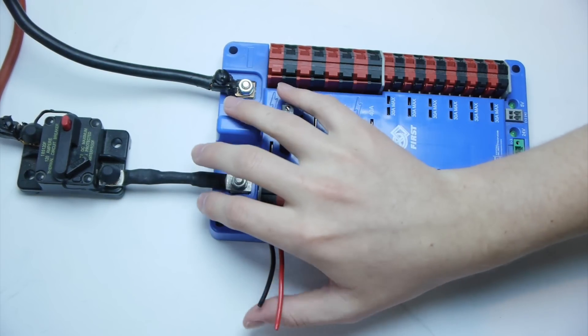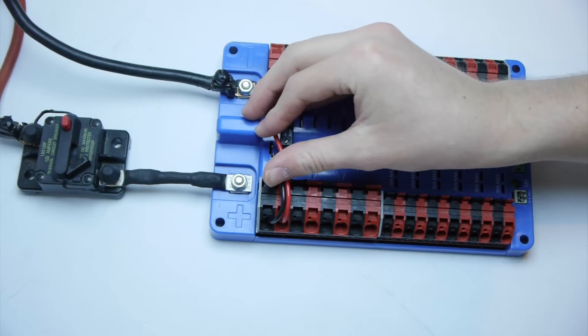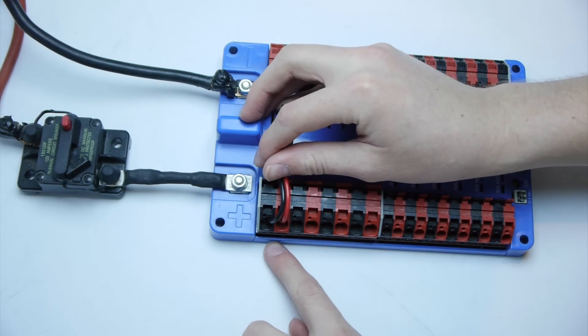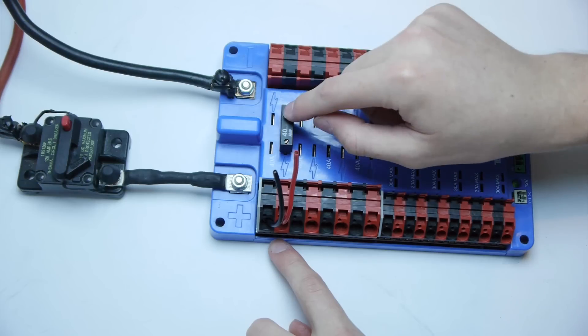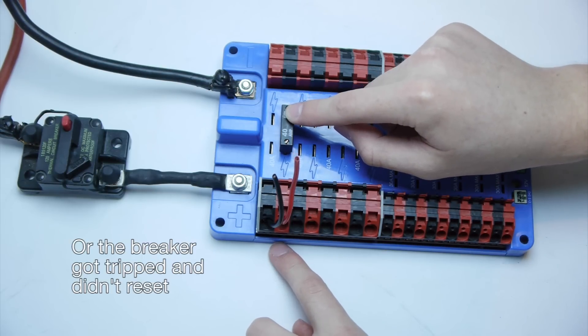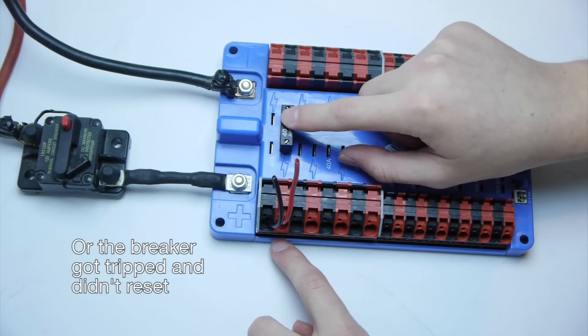If you don't use a breaker and you try to turn on your power distribution board, you'll just get a little red light here indicating that you don't have a breaker. So if you see that, you know your breaker either isn't working or you haven't put one in.